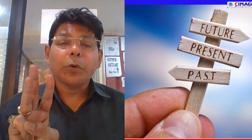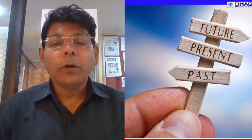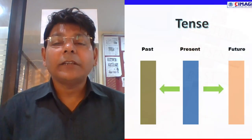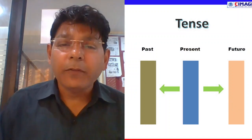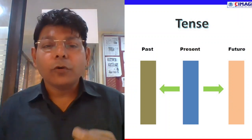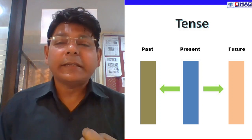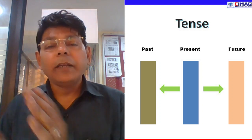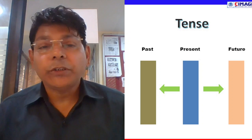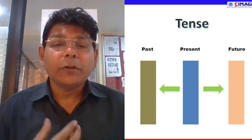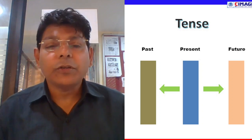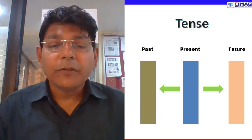तो tense के ये तीन broad categories होती हैं — present tense, past tense, और future tense. अगर हम थोड़ा detail में जाएं, तो ये present का moment है, इससे पहले जो भी वक्त था वो past है, और इस moment के बाद आने वाला जो भी वक्त है उसे future tense कहते हैं. Future is always a mysterious kind of thing, because we don't know what exactly is going to happen. So future is a kind of mystery for all of us.